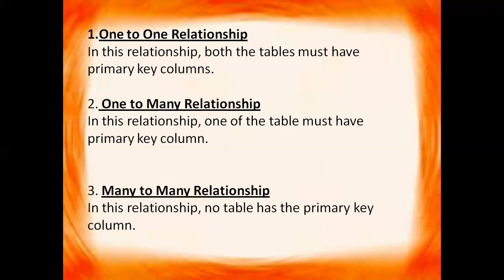In a many-to-many relationship, no table has a primary key and any record of one table can be connected to any record of another table. So in summary: one-to-one requires both tables to have primary keys with a connection between them; one-to-many requires only one table to have a primary key; and many-to-many has no primary key requirement, and any column of one table can be connected to any column or field of the other table.